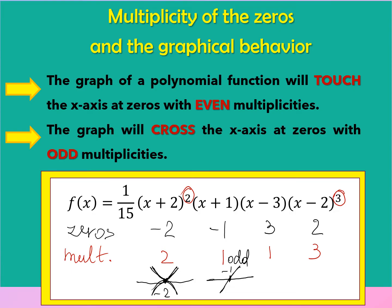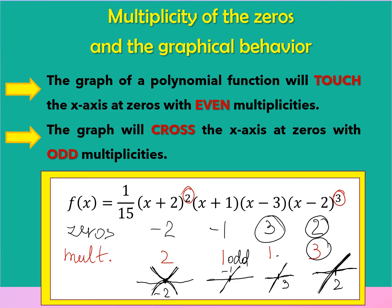After that, we have x equals 3. Zero equals 3 has odd multiplicity, so our graph will cross. And we have zero equals 2 with multiplicity 3, which is an odd value, so our graph will also cross the x-axis.